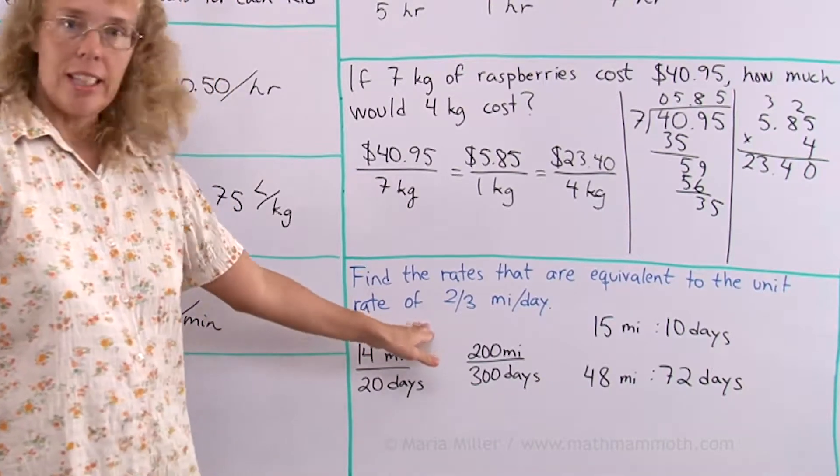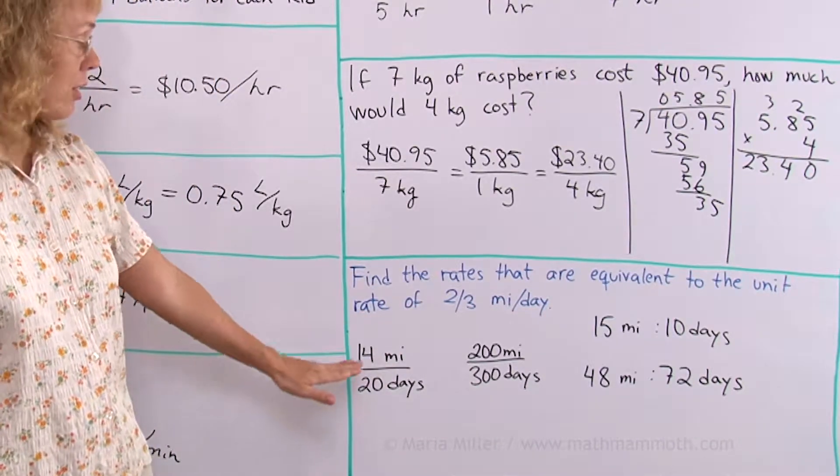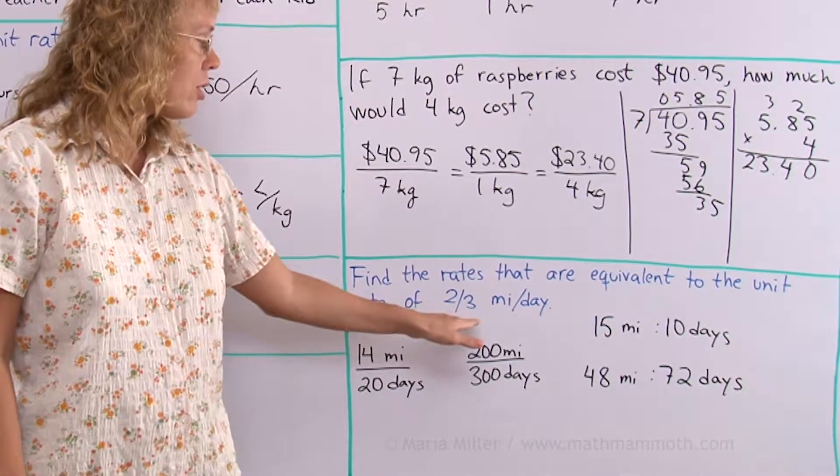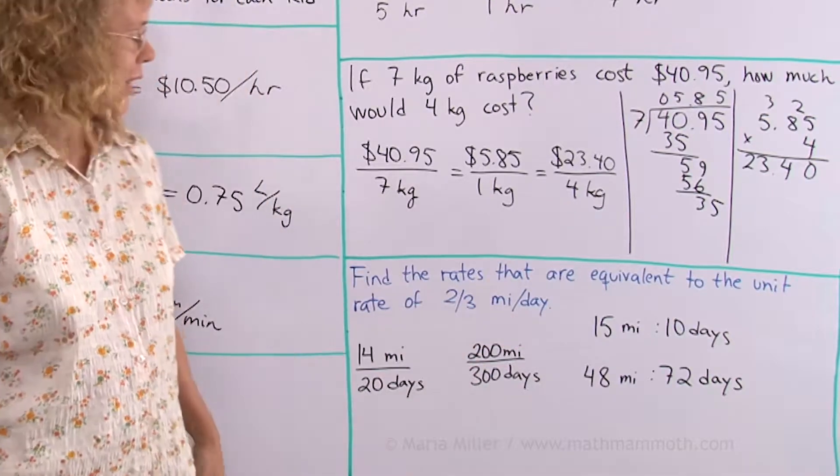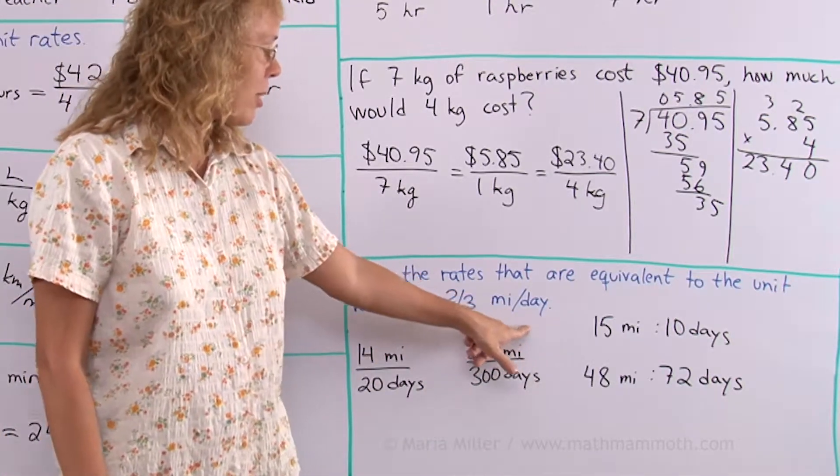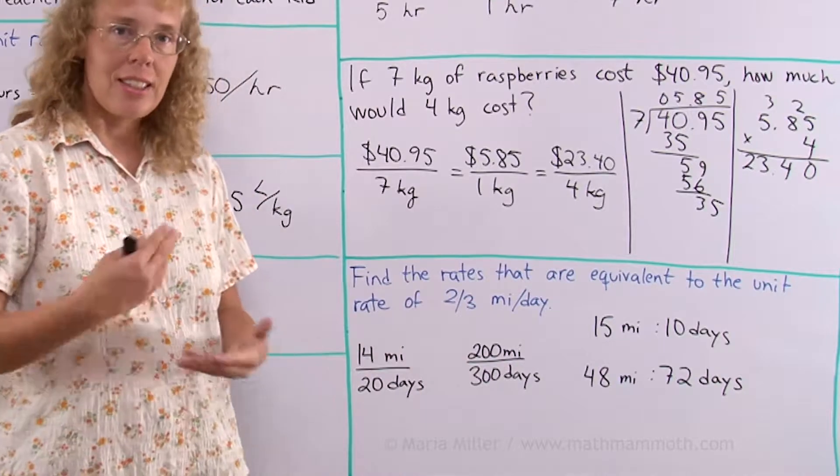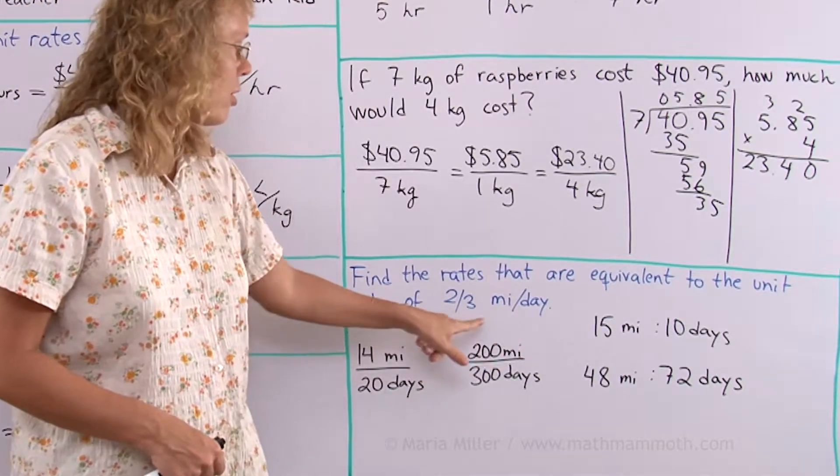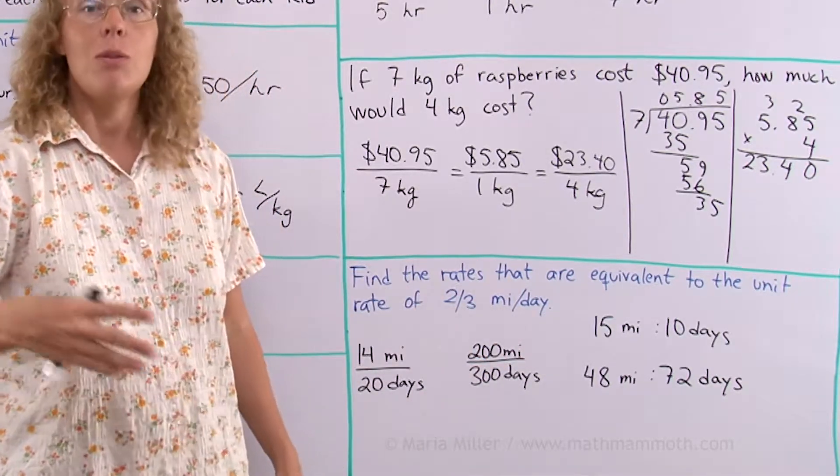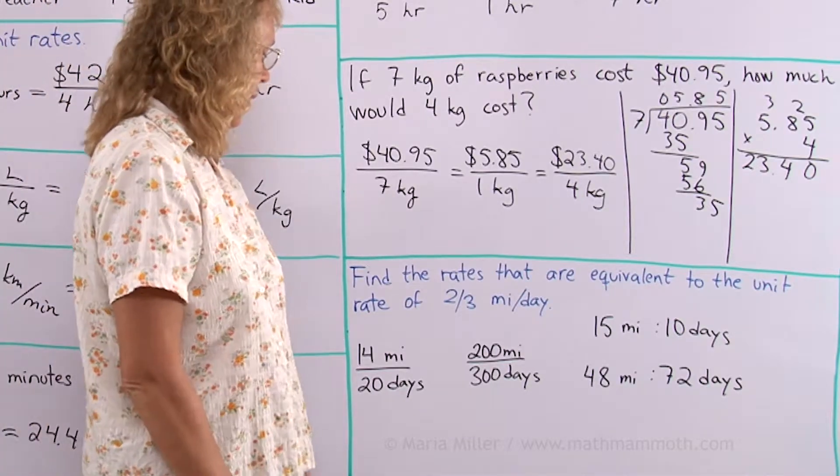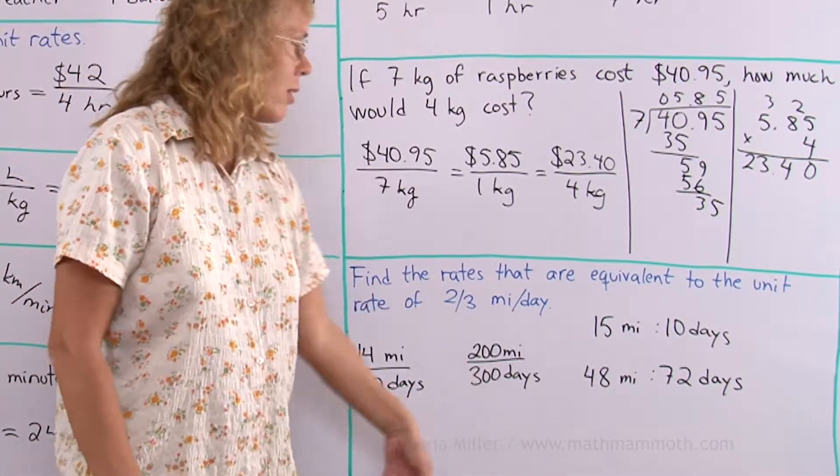Lastly, find the rates that are equivalent to the unit rate of 2 thirds of a mile per day. This is a unit rate because there is 1 day. The second term of the rate is 1 day. 2 thirds of a mile per 1 day.